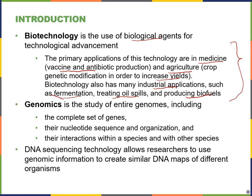In contrast, if we look at our second term, genomics, genomics is the study of entire genomes, and we're going to look at this in the second half of the chapter. Genomes include the complete set of genes — their nucleotide sequence, how the genes are organized, and how they interact within the species as well as with other species. It's really DNA sequencing technology that has allowed us to study genomics in much more detail, and we can use genomic information to create things like DNA maps of different organisms.